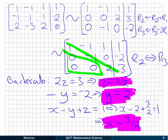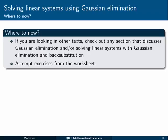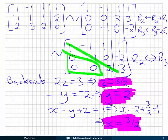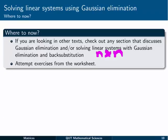That's our solution by Gaussian elimination and back substitution. If you're looking in other texts, check out any section on Gaussian elimination and solving linear systems with Gaussian elimination and back substitution. Remember we'll just be looking at N by N systems — textbooks may cover non-square systems, but don't worry about that too much. Make sure you're attempting the exercises from the worksheet and following through with the step-by-step process outlined here.